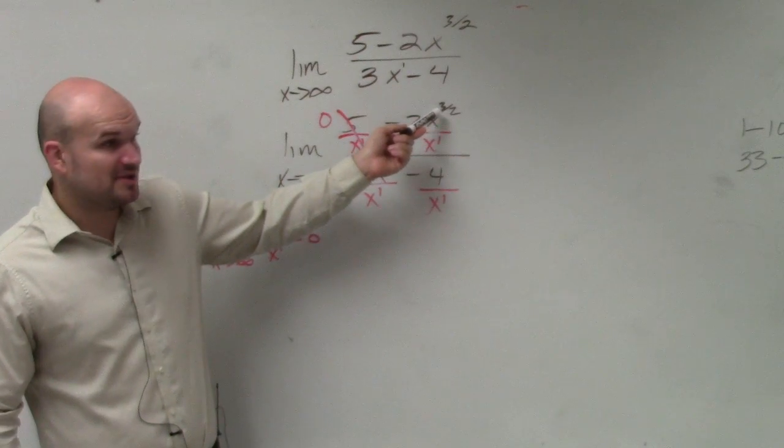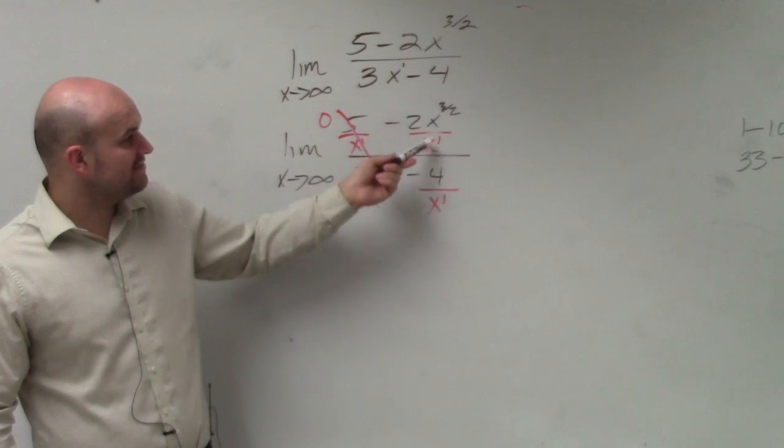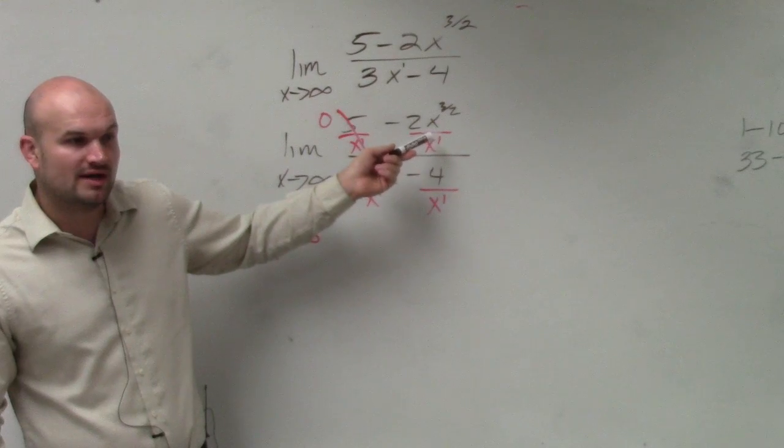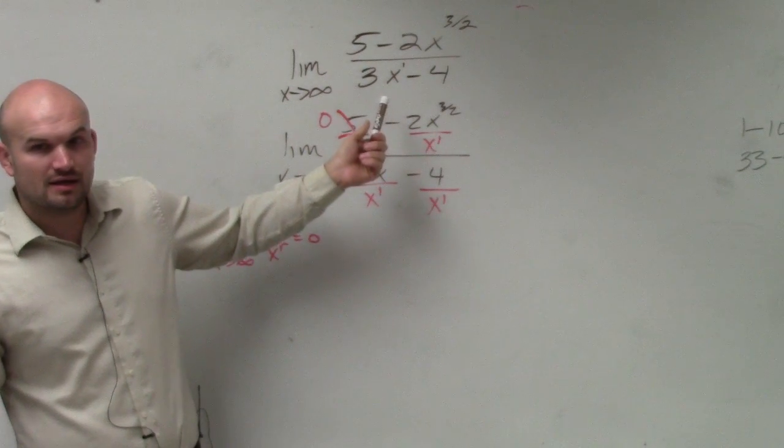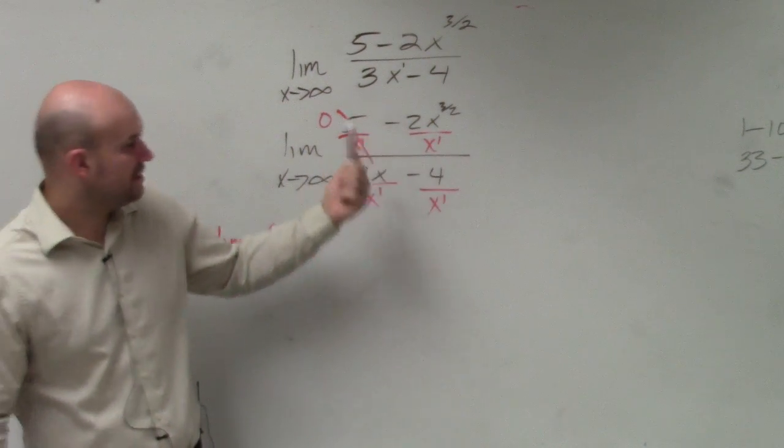Here, you have to use the properties of exponents. x to the 3 halves divided by x to the 1 is going to give you x to the 1 half.